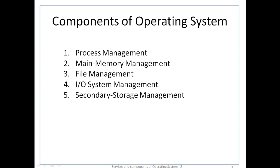An operating system provides the environment within which programs are executed. Internally, operating systems vary in their makeup. The goal of the system must be well defined before design begins. We can create a system as large and complex as an operating system only by partitioning it into smaller pieces, each with a carefully defined input, output, and function. There are 5 different components of the operating system.